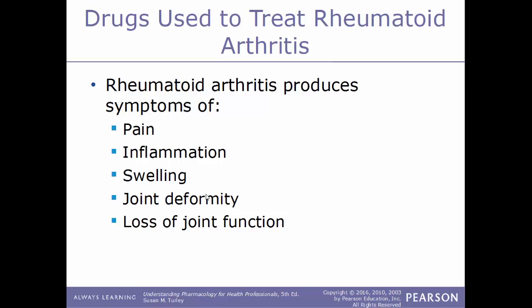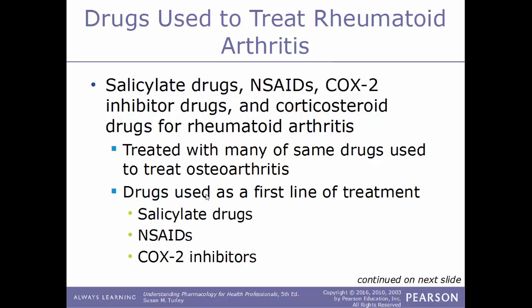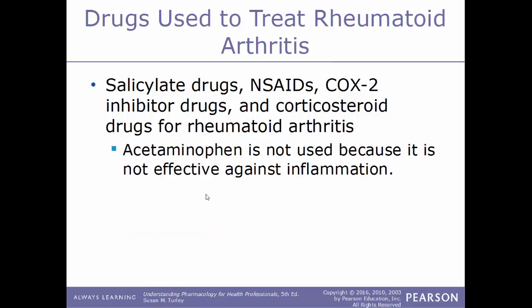Now we move into drugs used to treat rheumatoid arthritis (RA). RA produces symptoms such as pain, inflammation, swelling, joint deformity particularly in the hands, and loss of joint function. Rheumatoid arthritis is an autoimmune condition where the body's own antibodies target and destroy cartilage and connective tissue in the joints; it is thought to be triggered by a virus. First-line treatments include salicylate drugs, NSAIDs, and COX-2 inhibitors. Acetaminophen is not used because it is not effective against inflammation.